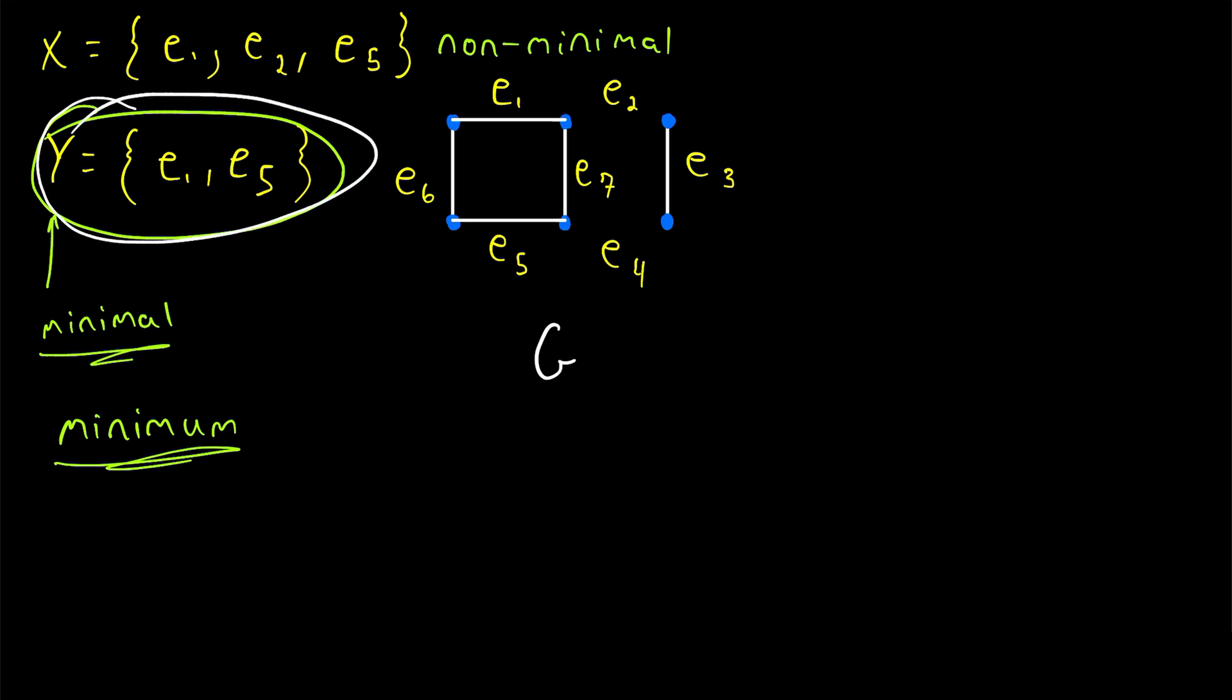But Y is a minimum edge cut because there is no smaller edge cut in the graph. That means to disconnect this graph, we need to delete at least two edges. And of course, they can't just be any two edges. They have to be two particular edges that make up a minimum edge cut.